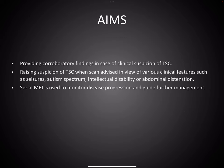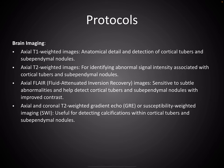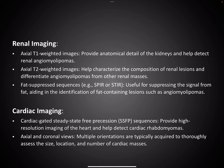The aims are: to provide corroboratory findings in case of clinical suspicion of TSC, to raise suspicion of TSC in cases where the clinician has missed findings and stigmata, and in known cases of TSC to serially monitor disease progression and guide further management. Brain imaging protocols include axial T1, T2 FLAIR, gradient imaging and susceptibility weighted imaging. Renal imaging is done in routine abdominal protocol using fat suppressed sequences, T1 and T2 weighted sequences, as well as cardiac imaging.